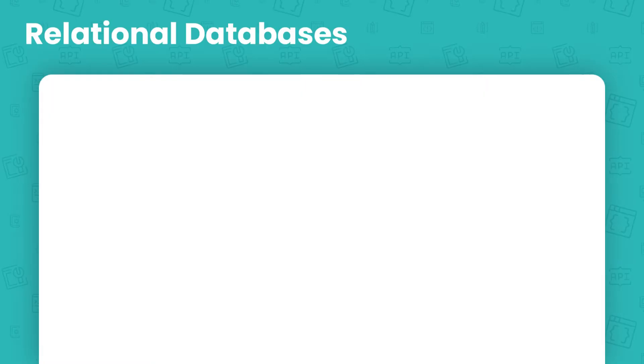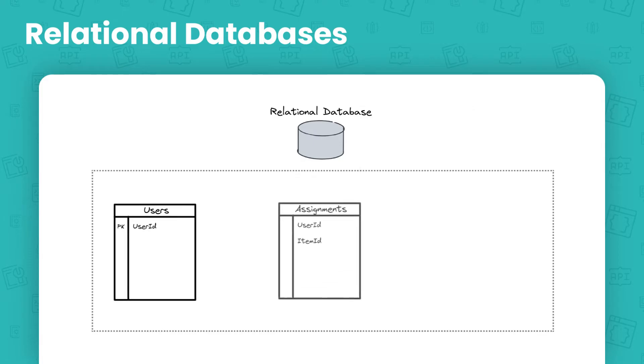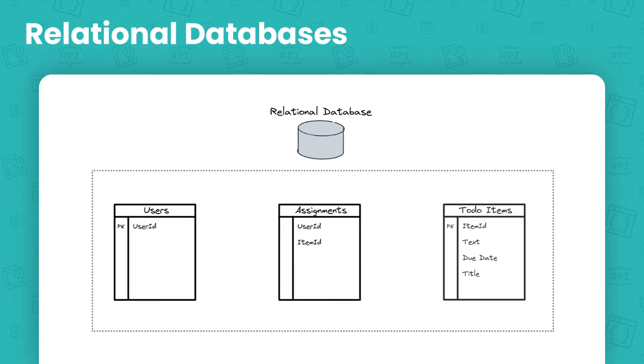To decide which kind of database would be best for each use case, you should know the two buckets databases can fall into. They can be either relational or non-relational databases. We're going to start with relational ones, because this kind of database has been around for more than 50 years and there's no sign they're going out of business anytime soon. Relational databases organize data in a structured manner, with tables, rows, and columns, enabling efficient data management and retrieval. They support relationships between tables using primary and foreign keys.